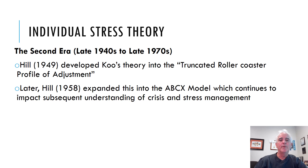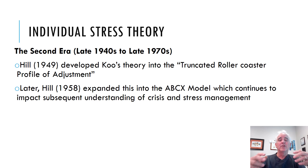The second era was from the late 1940s up until the late 1970s — a 30-year span during which some work was done but it really took off after the late 70s. Hill in 1949 took Coos's theory and developed it into the truncated roller coaster profile of adjustment. Later, Hill expanded this into the ABCX model, which continues to impact our subsequent understanding of crisis, stress management, and how families respond to them.